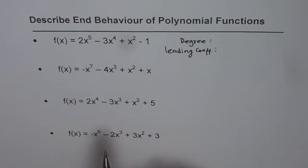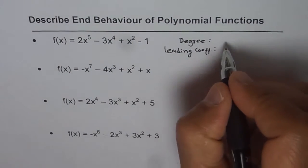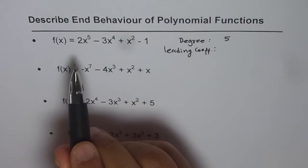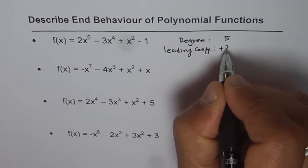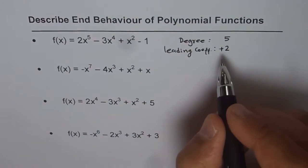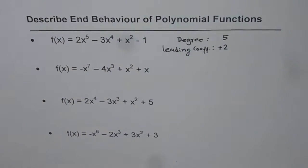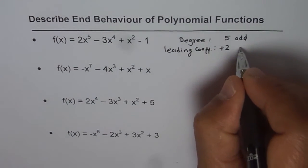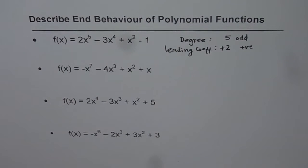What is the degree of this polynomial? The first example is f(x) = 2x⁵ - 3x⁴ + x² - 1. Degree is the highest exponent, which is 5. So degree is 5 and the leading coefficient is the coefficient of x to the power of 5, which is 2 — or rather, positive. We are more interested in the sign than the number. So we have an odd degree with a positive leading coefficient, and that decides the end behavior.